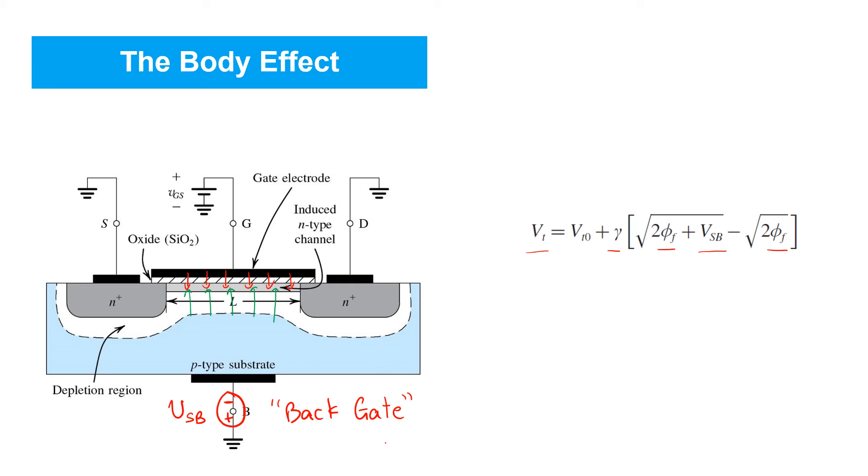The second point of intuition is to recognize that there's a square root relationship there because, unlike the gate channel capacitance, which is determined by an oxide region with a fixed thickness, T-ox, in this case, the insulator between the back gate and the channel is a depletion region whose thickness will actually change with the voltage applied across it.